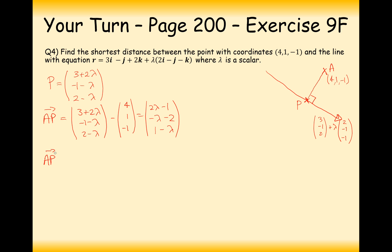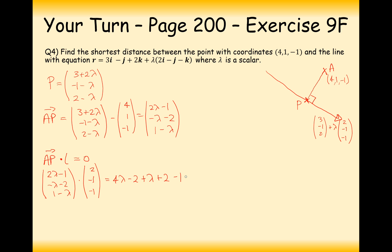Now we dot this with the direction vector of line L, setting it equal to 0 because the two lines are at a right angle. So (2 lambda minus 1, minus lambda minus 2, 1 minus lambda) dotted with (2, minus 1, minus 1) equals 0. Expanding the brackets: 4 lambda minus 2, plus lambda plus 2 (double negative), plus lambda equals 0. Simplifying, we get 6 lambda equals 0, then adding gives lambda equals 1 over 6.